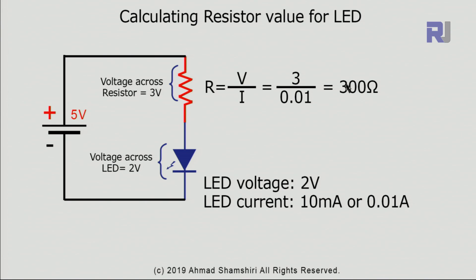If you go below 300 ohms, the voltage across the LED will be higher than two volts, causing higher current that will damage the LED. If you use a larger resistor, the LED voltage will drop below two volts — say 1.9 or 1.8 volts — making it dimmer. If you go very high, like three to five kilo-ohms, the LED will barely be visible. So never go below 300 ohms, and up to one kilo-ohm will work fine.